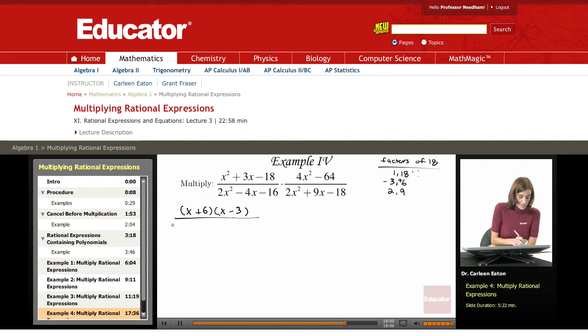The denominator, the first step is to factor out the common factor of 2 to get 2x squared minus 2x minus 8. Here I have a common factor of 4, and that's going to leave x squared minus 16, difference of two squares.